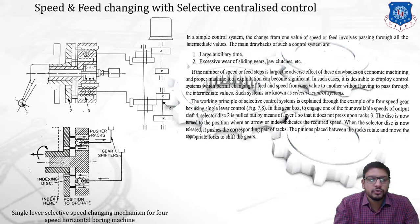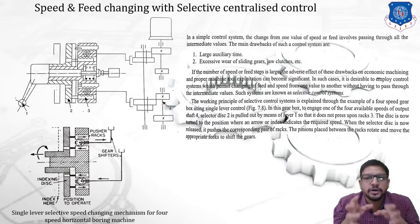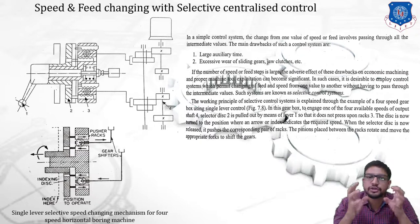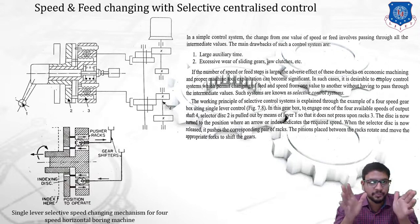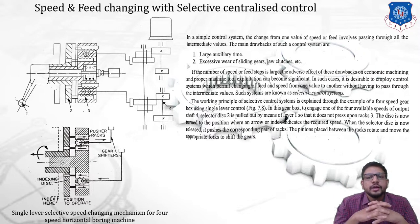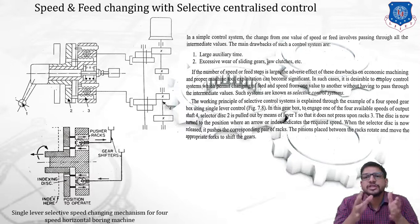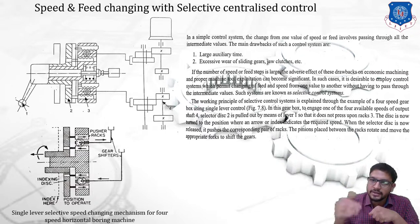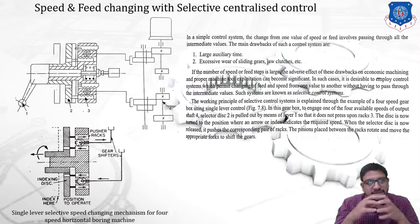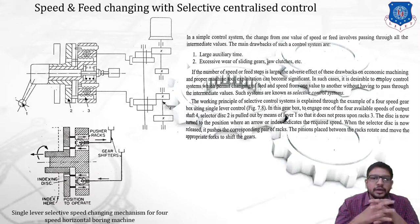We are going to use this control system for changing the speed, or we are going to actuate the gearbox — the double cluster gear. These gear shifting faults are operated by this centralized control system. In a simple centralized control system, the change from one value of speed involves passing through the intermediate values. If we need to shift from 1000 RPM to 3000 RPM, we need to pass through 2000 RPM. But by using a selective method, we can move from any speed to any speed.